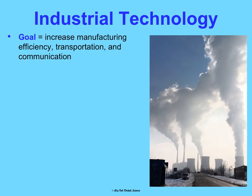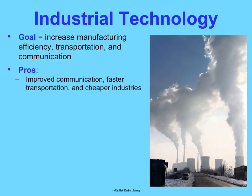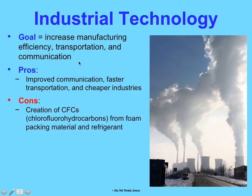Industrial technology. The goal is to increase manufacturing efficiency, transportation, and communication. We want to talk as quickly and cheaply as possible, get places as quickly and cheaply as possible, and get products and goods really cheaply. The pro is that we're able to do all of these things faster and cheaper. Now for the cons — just listing a few here.